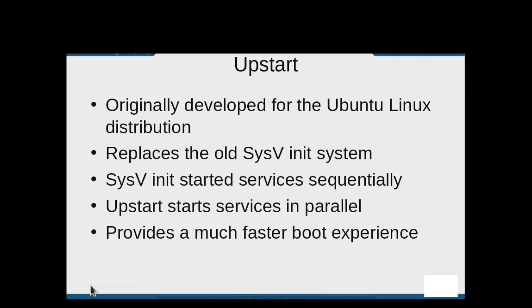In this video, we will discuss Upstart, the new default system startup service. It was originally developed for the popular Ubuntu Linux distribution. Red Hat uses Upstart in RHEL 6 as the replacement for the old System V init system. System V init started every service in a sequential order, so if a single service took a long time to start, the whole boot process waited on that one service. Upstart, on the other hand, looks at services and tasks as events, and only starts services as they are needed, starting events in parallel, leading to a much faster and more efficient boot process.